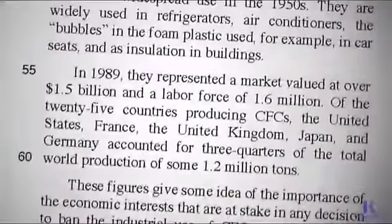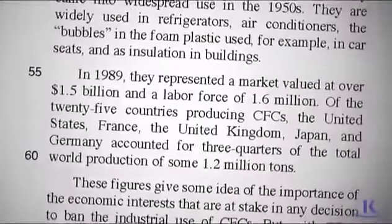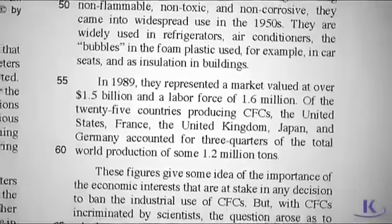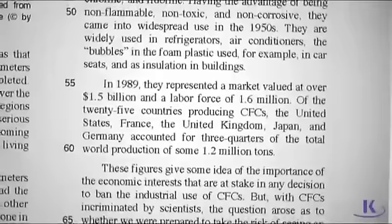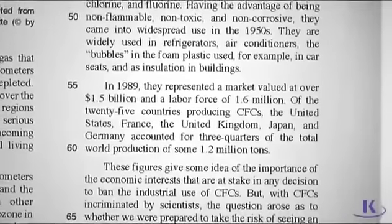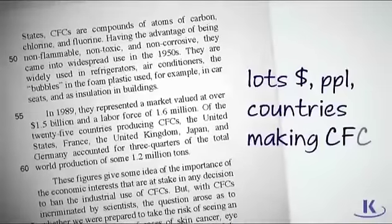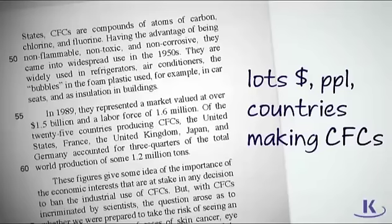Paragraph 6 is shorter and contains a lot of very detailed information about dollars, numbers of people, and countries. Don't slow down to figure out the deep meaning of all of this data. You can look at this paragraph and say to yourself, there's a lot of money, people, and countries involved in CFCs. If a question asks about this data, your paragraph note will guide you back to this paragraph. Then you can re-read the information. The gist is that there's a lot of money, people, and countries making CFCs.